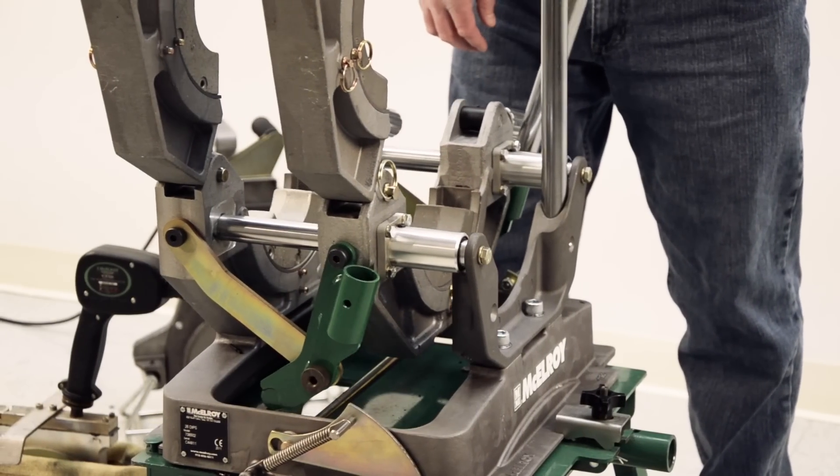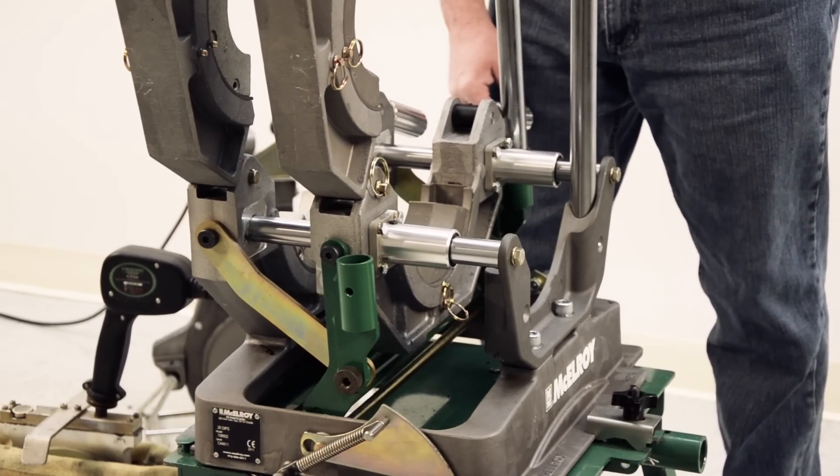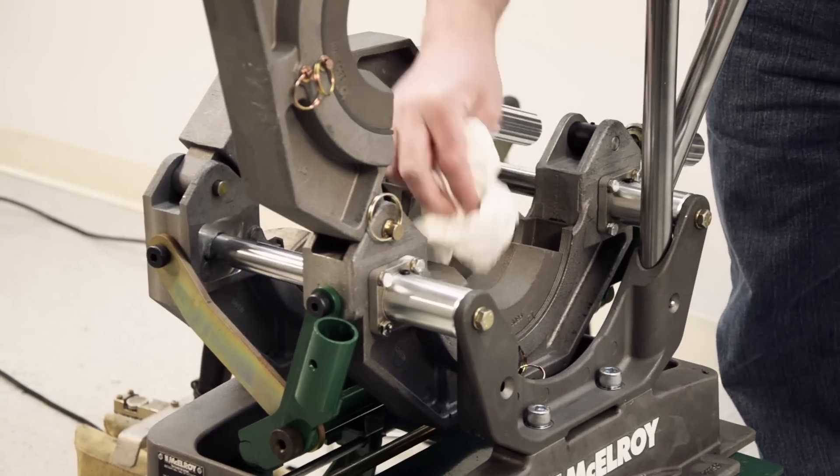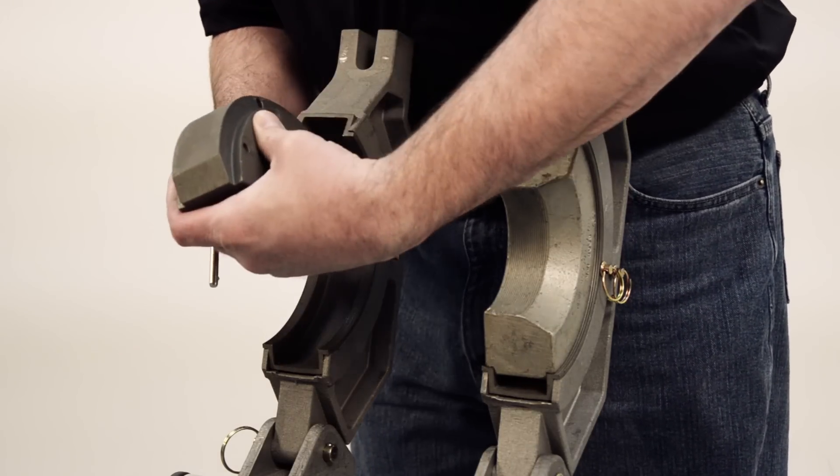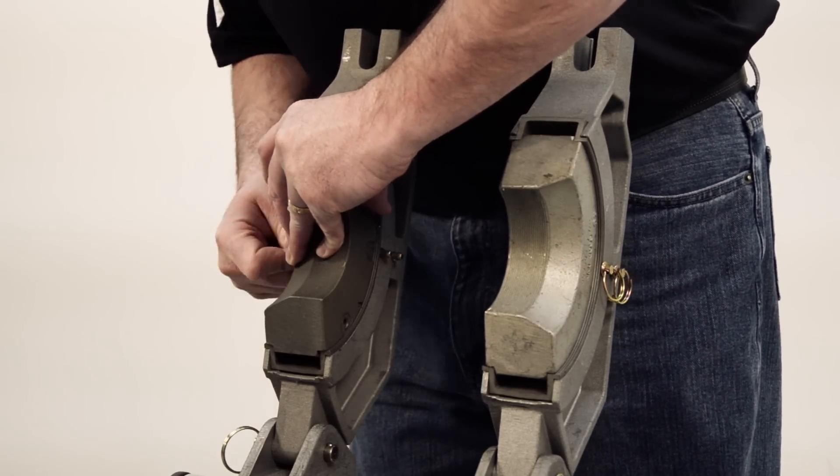Before you begin, take a look at the machine you will be using and make sure it is in proper working order and is as clean as possible. This is also a good time to ensure that you are using the correct size of inserts for the pipe you will be fusing.